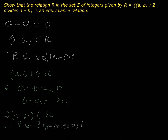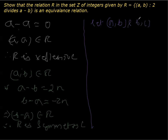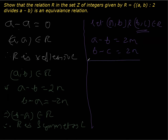Now in order to prove it is transitive, we will take (a, b) and (b, c) both belonging to R. If (a, b) belongs to R, it means a minus b is divisible by 2 — let's say it equals 2m. And if (b, c) belongs to R, it means b minus c is divisible by 2 — let's say it is 2n. Now I'm going to add these two equations, and we can clearly see that b and minus b get cancelled.